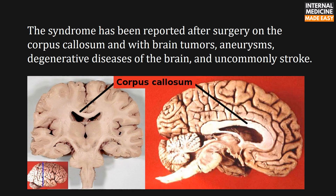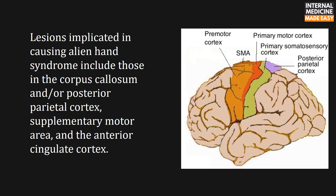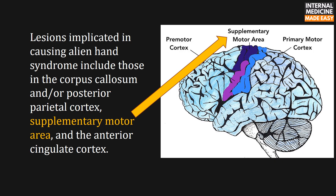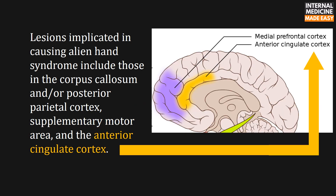The syndrome has been reported after surgery on the corpus callosum and with brain tumors, aneurysms, degenerative diseases of the brain, and uncommonly stroke. Lesions implicated in causing alien hand syndrome include those in the corpus callosum and/or posterior parietal cortex, supplementary motor area, and the anterior cingulate cortex.